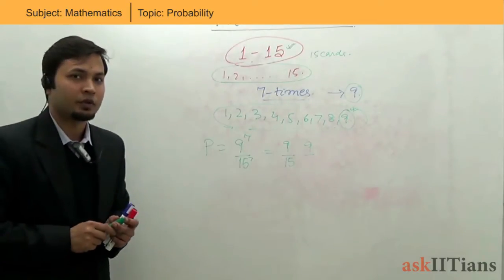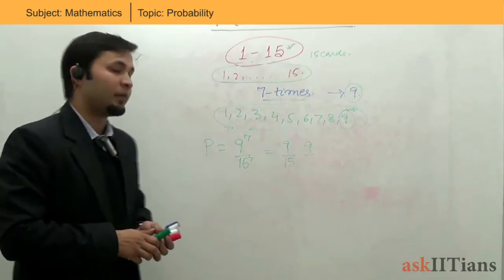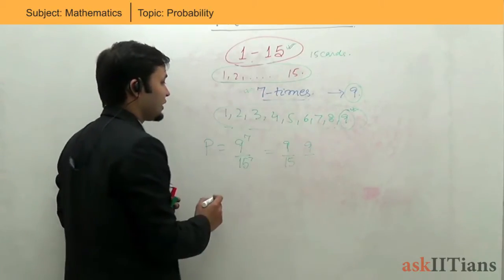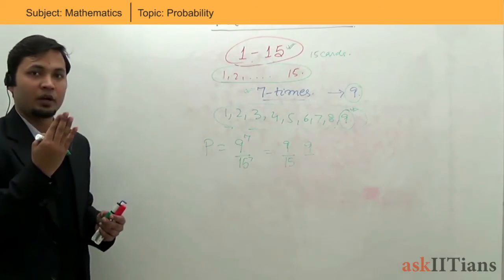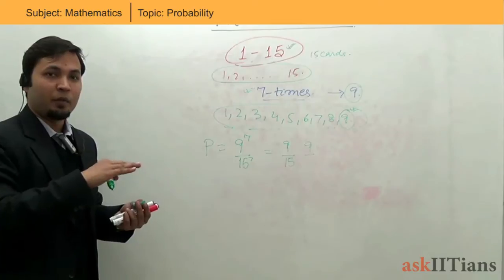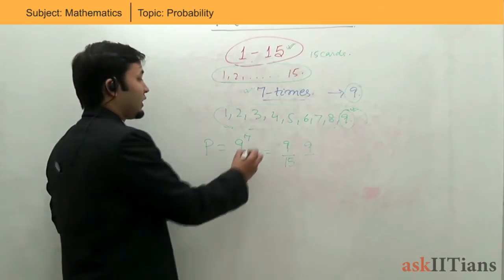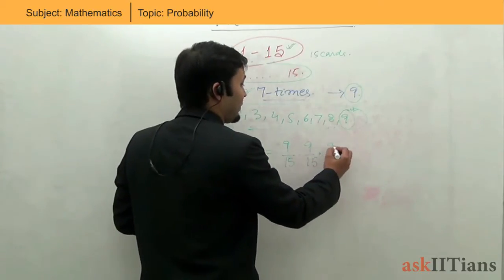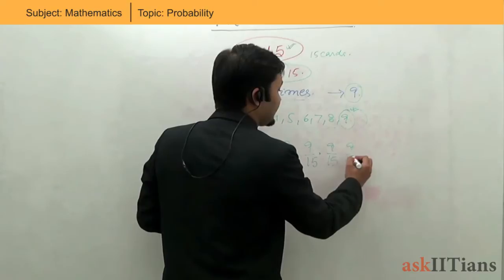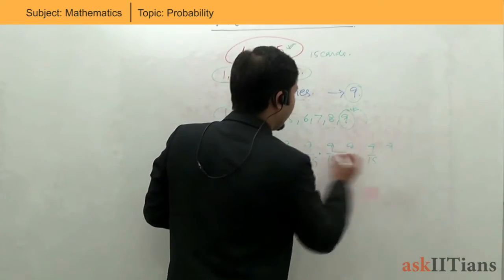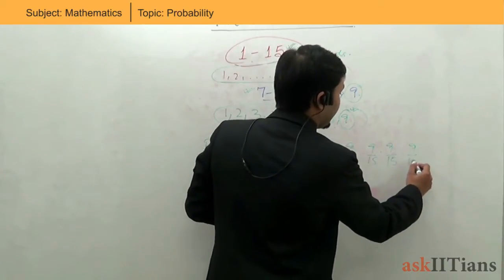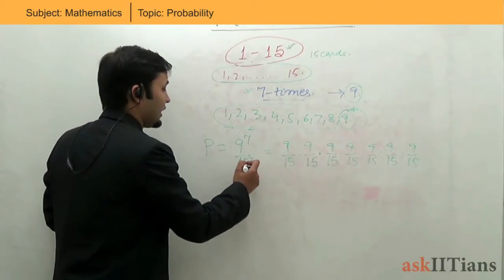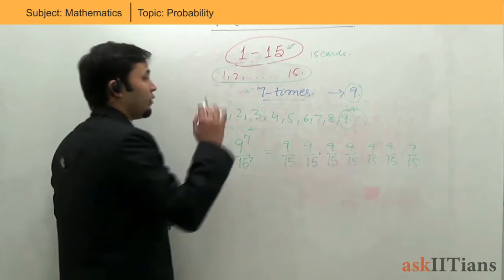Why have we written 9 to the power 7? It is given that we are doing the same event seven times. Each time I pull out a card, a certain number comes, I put it back, but the same event can occur again. So for each draw the probability is 9 by 15, and when I repeat the event seven times I multiply: 9 by 15, seven times — which gives 9 to the power 7 divided by 15 to the power 7.